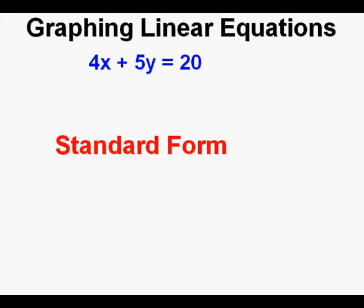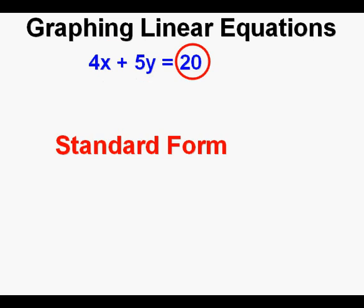Let's talk about standard form first. The simplest explanation of an equation in standard form is that the variables are on one side of the equal sign, and a number is by itself on the other side. There are a couple other rules for being in standard form, like the x variable has to be positive and the coefficients have to be the smallest integers possible, but we won't worry about these — we're just trying to solve problems without regard to the conventions of algebra.